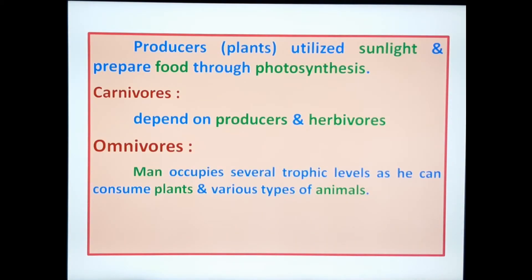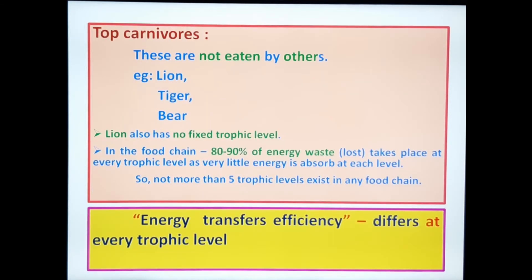Producers — nothing but plants and trees — utilize sunlight and prepare food through photosynthesis. Carnivores depend on producers and herbivores. Omnivores means man; man occupies several trophic levels in the food chain as he can consume plants and various types of animals also. Top carnivores are not eaten by others — examples are lion and tiger.